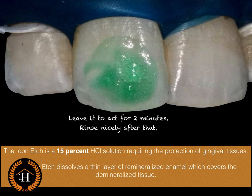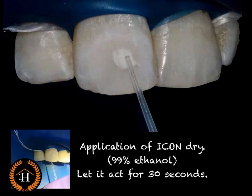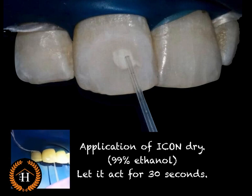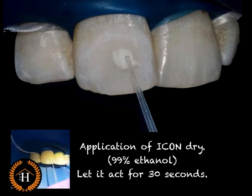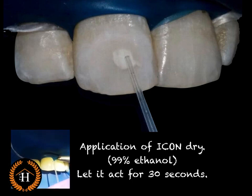This is 15 percent hydrochloric acid, which starts the initial etching on the tooth so the surface gets exposed — it dissolves the thin layer of remineralized enamel covering the demineralized tissue. Then comes the second step: Icon Dry, 99 percent ethanol, to dehydrate and expose the surface completely. It's available with a small tip; just apply it onto the tooth and let it act. Make sure any excess is removed with the help of a suction device.